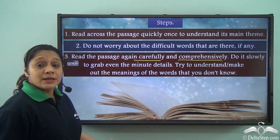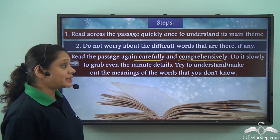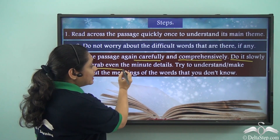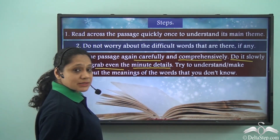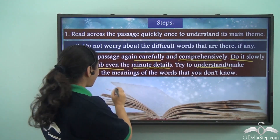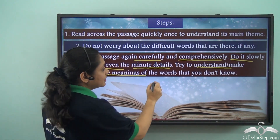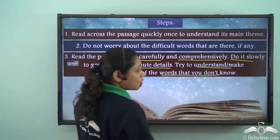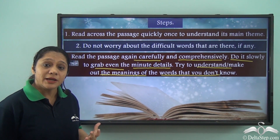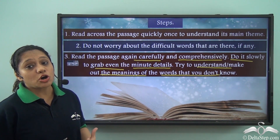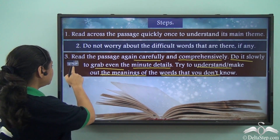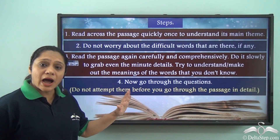Hold your horses and go to the next step, which is to read the passage again carefully and comprehensively — that means in detail. Do it slowly to grasp even the minute details. Try to understand or make out the meanings of the words you don't know. When you read the passage comprehensively, you can infer the meanings of unfamiliar words from context.